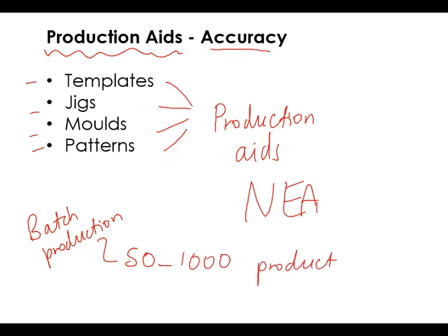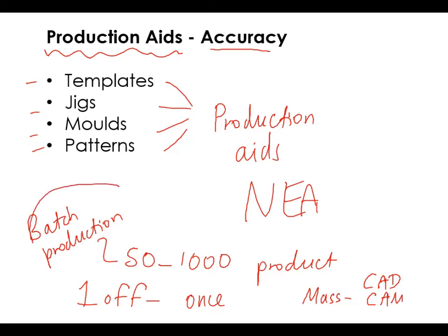If you are making a one-off it's kind of pointless to make a template unless you're checking quality control, because you are only going to use that template once. And if anything larger, for example if you were doing mass production, everything is going to be CAD, CAM, controlled by machinery. So production aids are mostly used in batch production because it's where people are most involved.